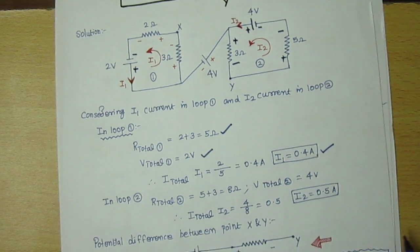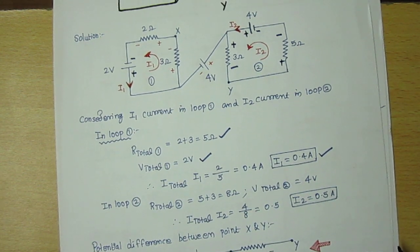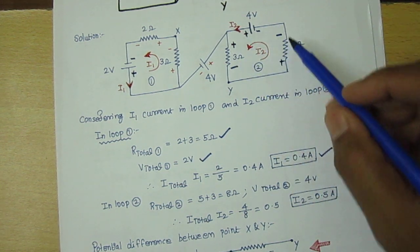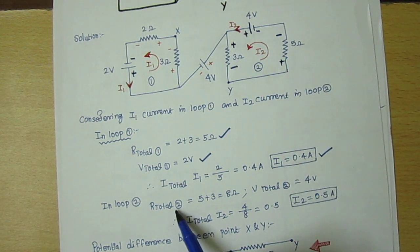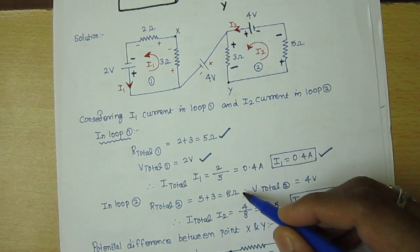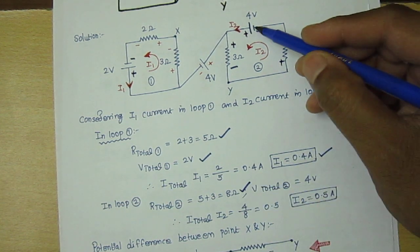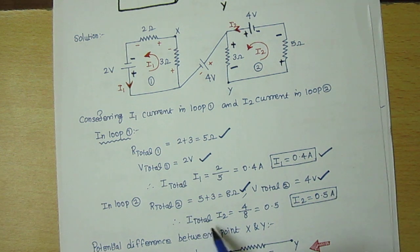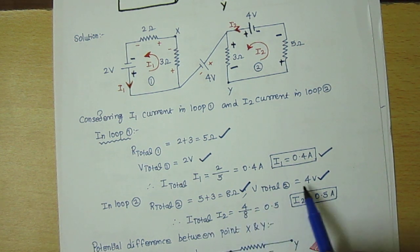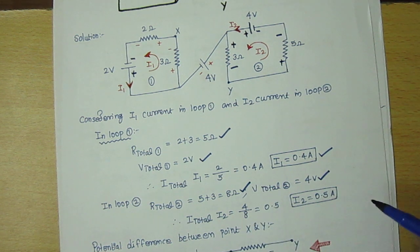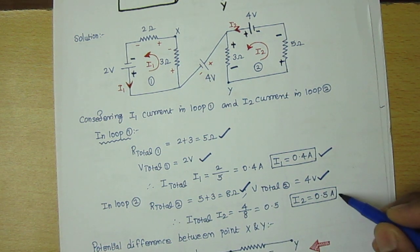Coming to loop 2, the voltage in this circuit is 4 volt. So I2 = V/R, where V is 4 and R is 8. So I2 = 0.5 ampere.